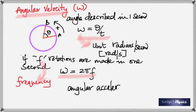What about angular acceleration? If an object moves in a circle with constant velocity, does it have any acceleration? Yes — centripetal acceleration, directed towards the center. But if you keep increasing the speed, starting slow and speeding up, you get another acceleration called angular acceleration, also known as tangential acceleration.